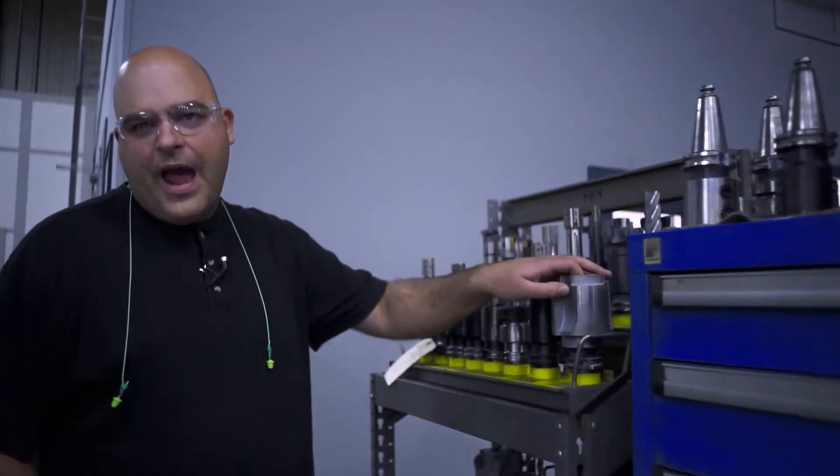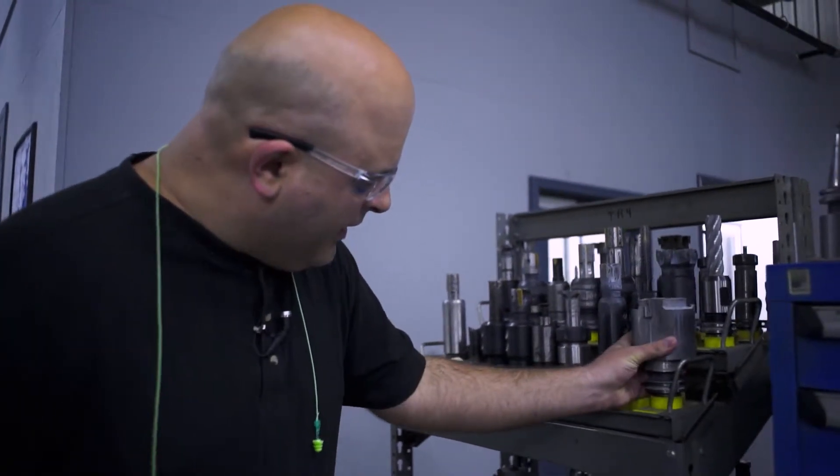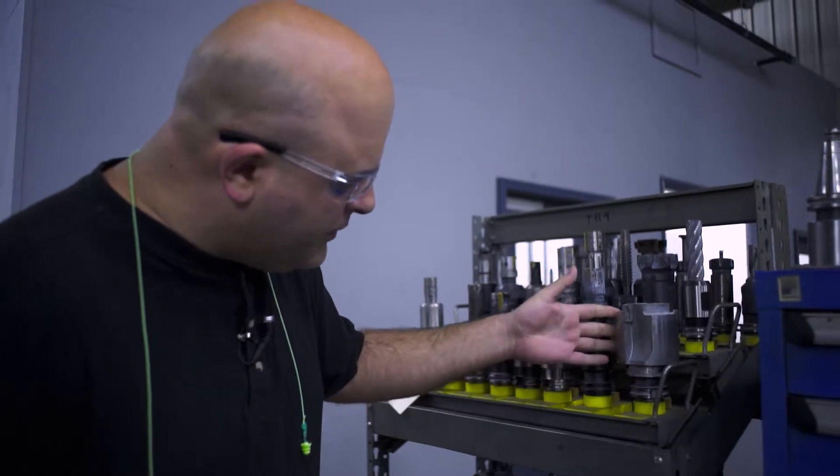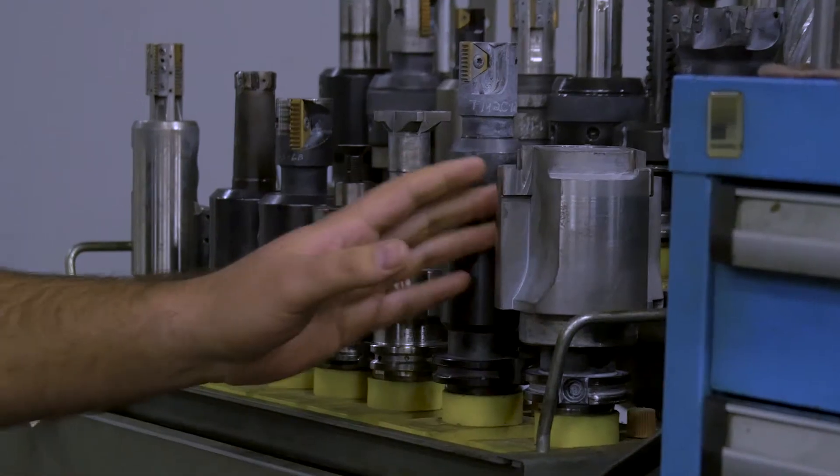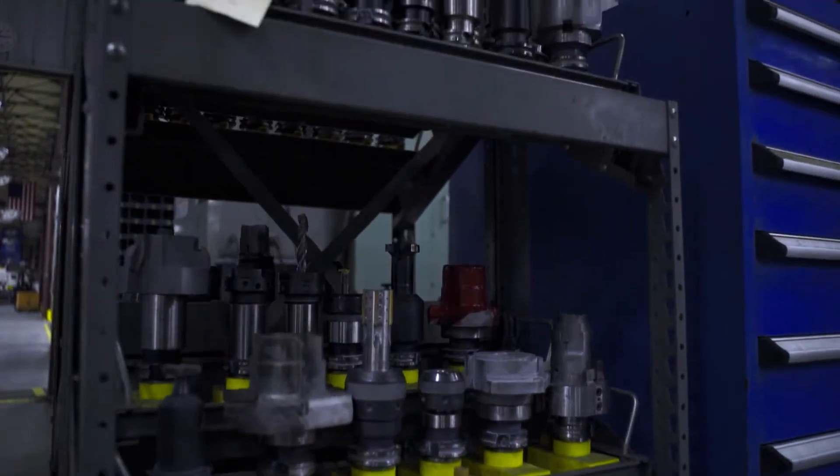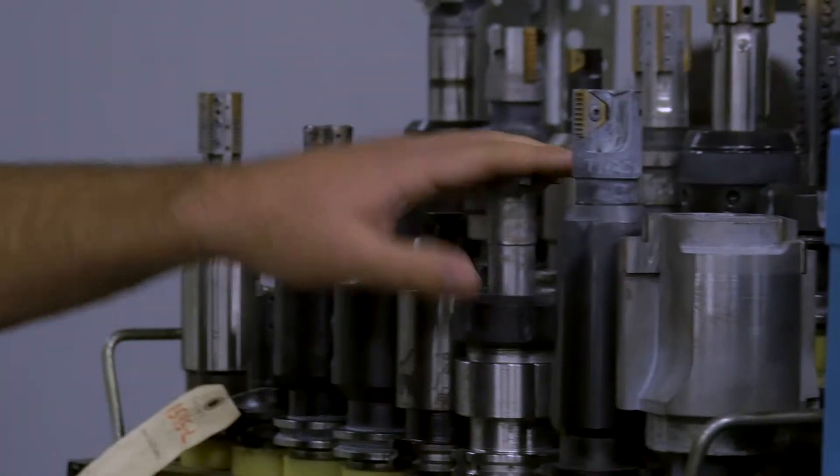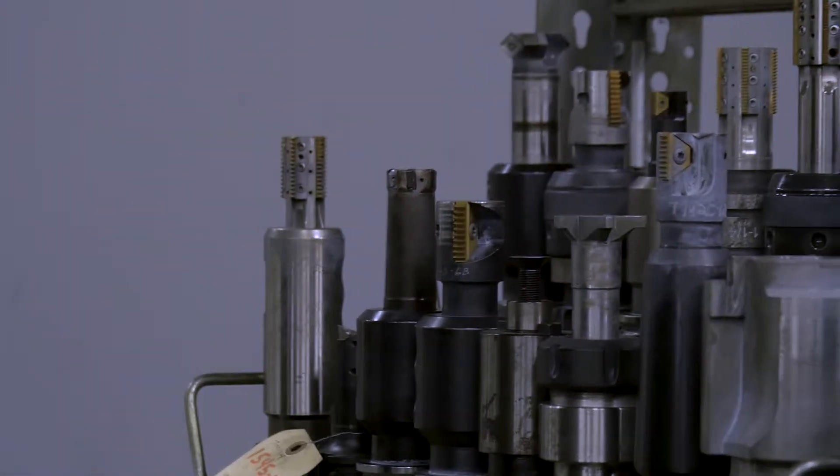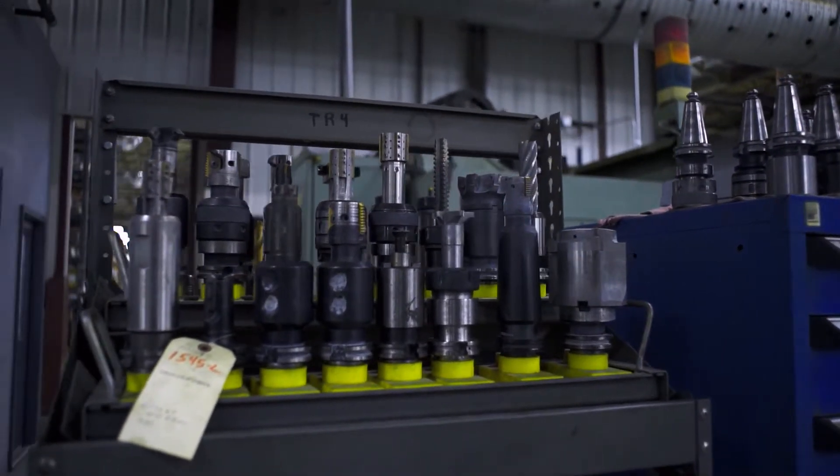This would be a good example of some of the customized tooling that we use here at Milwaukee Valve. This would be a customized porting tool to cut a swing check valve body. It's all made in-house. The tool body is made in-house. The carbide is brazed on in-house and cut on our wire EDMs in our tool room. You can see lots of other versions of this. We have thousands and thousands of our own tools in stock to make a lot of our product here.